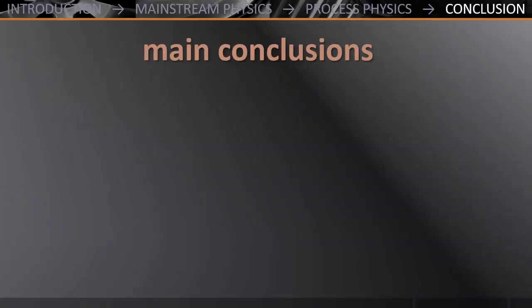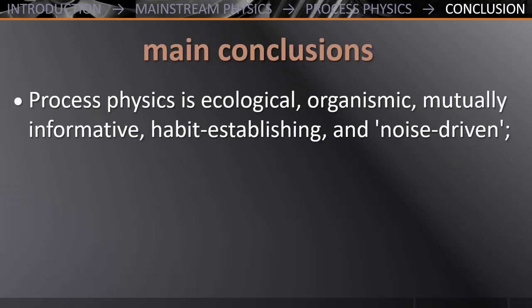From all this we can draw several conclusions. Process physics is an utterly ecological way of doing physics, in that it does not split up its universe of discourse into target system, subject system, and their external environment. Furthermore, process physics is organismic rather than mechanistic, mutually informative rather than based on mere numerical data. It aims to set up a more beable-like modeling of nature, instead of portraying its observables. Also, via what may be called 'routine of nature,' it is habit-establishing, instead of being governed by pre-available laws of nature. And on top of all that, it is also noise-driven, so that creative novelty becomes possible as an alternative for strict determinism.